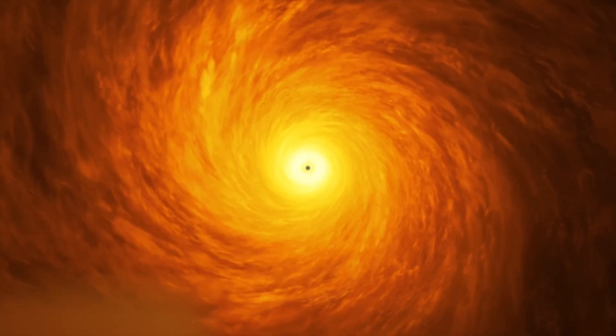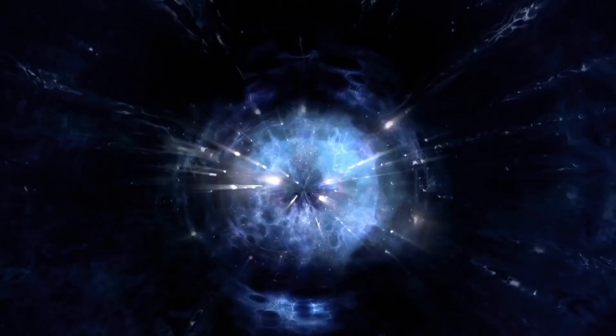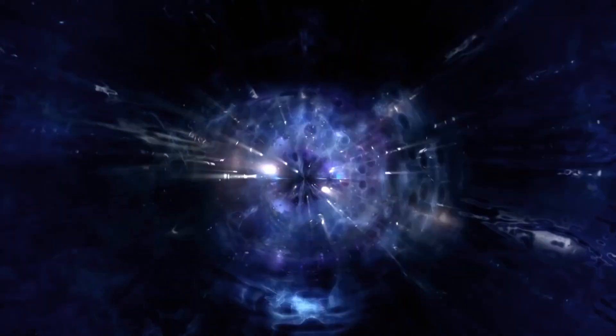For us, the black hole is the end of space, the end of time, the end of everything. But if the star lacks the mass needed to generate that level of gravitational energy, it won't collapse entirely and instead will form a neutron star.